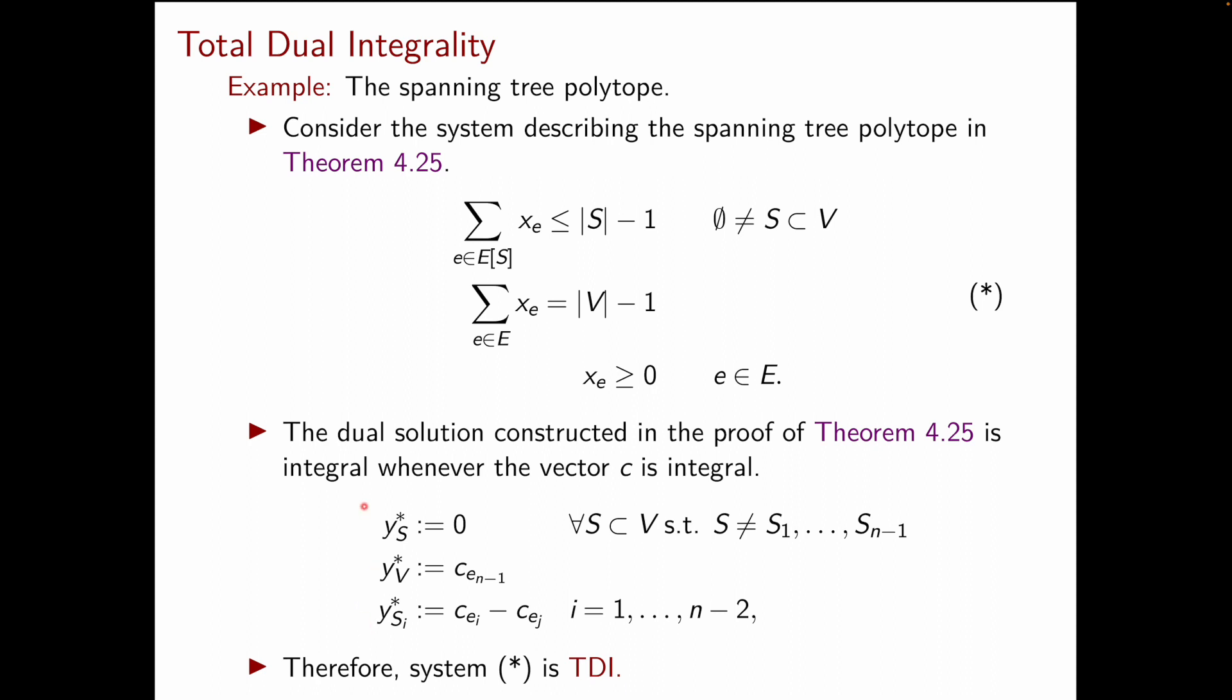In fact, you can see here the dual solution that we defined. We had y_S* = 0. Then we had y_V* = c_{e_{n-1}}. And this is an integer number, because c is an integer vector. And then we had y_S*, defined as c_{e_i} - c_{e_j}. And once again, this is an integer number, because both c_{e_i} and c_{e_j} are integers. So, in particular, we have shown that the system star, describing the spanning tree polytope, is, in fact, TDI.